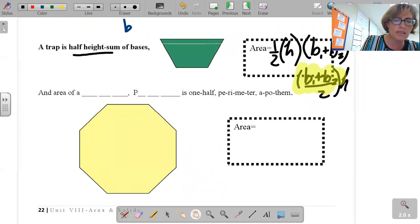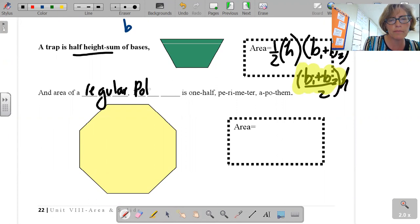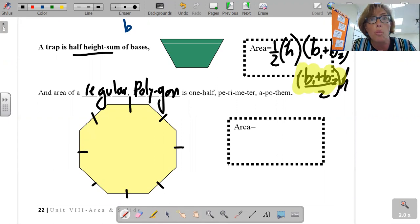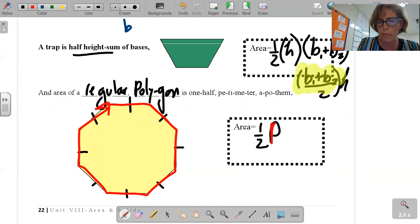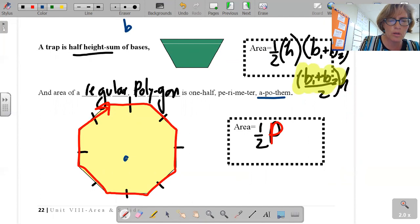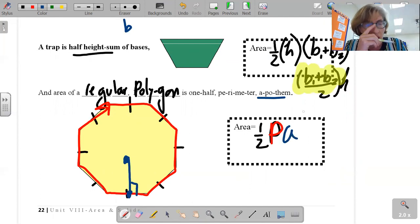Then last lesson was a regular polygon with all equal sides: one-half perimeter, which means you walk it around, times apothem. Center midpoint right angle, that's your apothem. One-half P times A. So these are the equations we have so far.